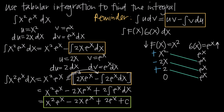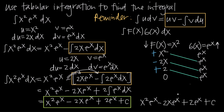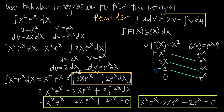This is all we need to get directly to our final answer. We take each value in the f(x) column, multiply it by the value it's connected to, and apply its sign. So we get positive x squared e to the x, then minus 2x e to the x, then plus 2 times e to the x. We add the constant of integration c, and that's our final answer. Notice this is exactly the same answer we got using integration by parts — they match exactly.